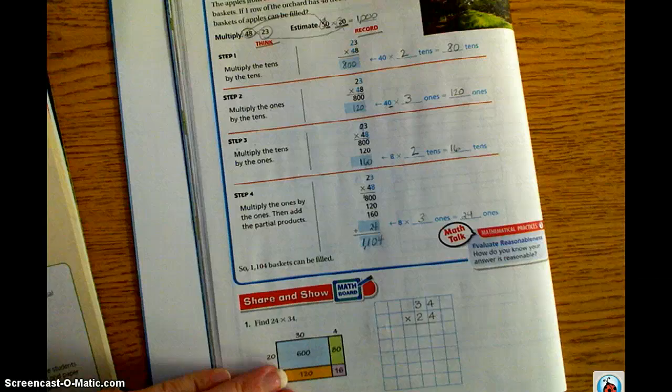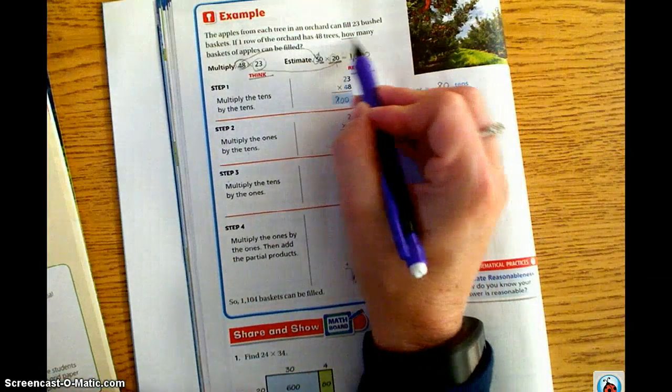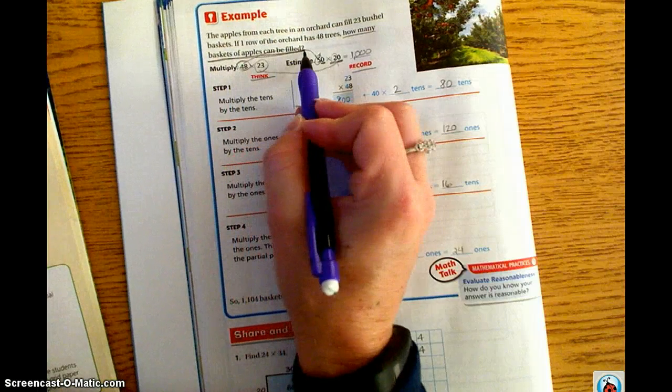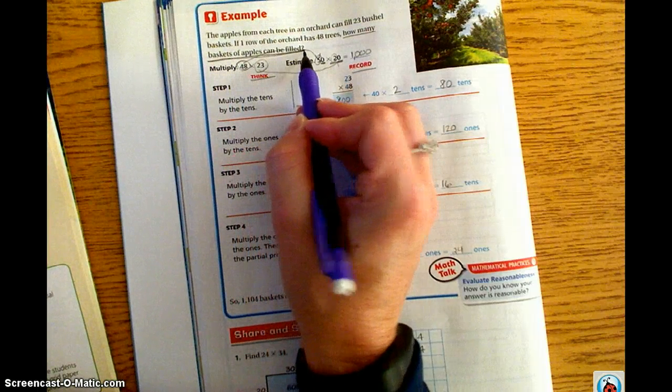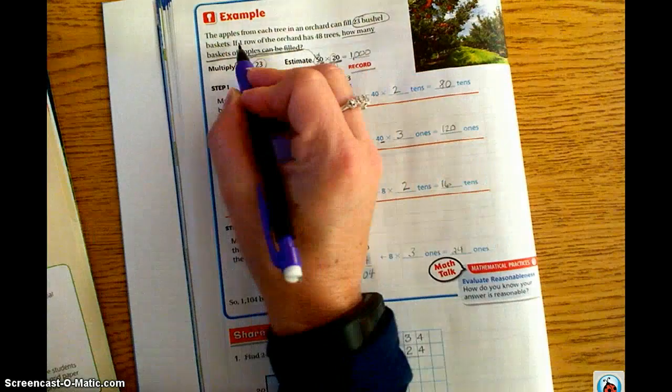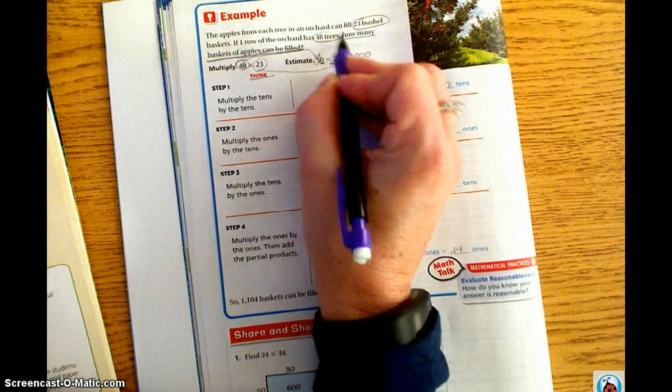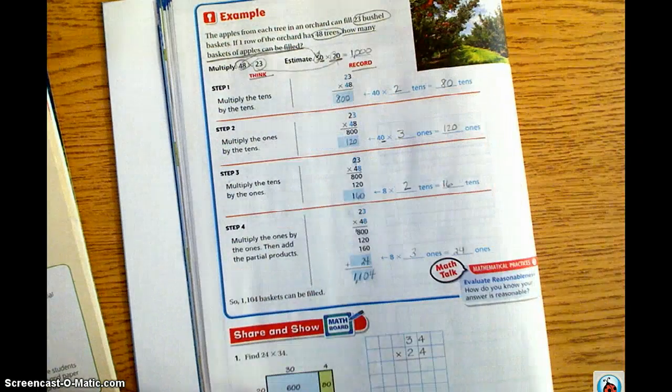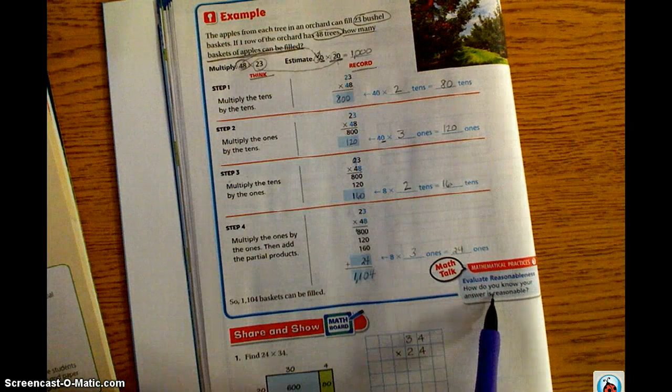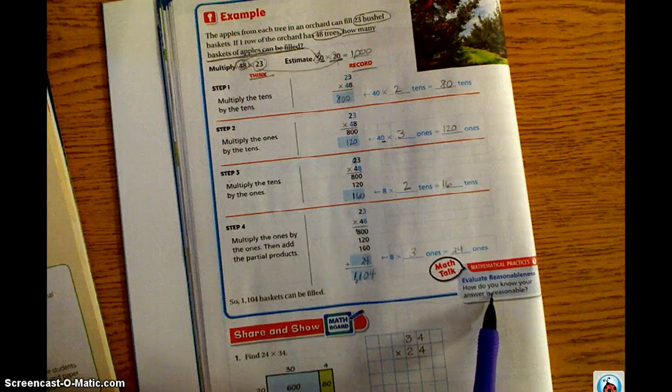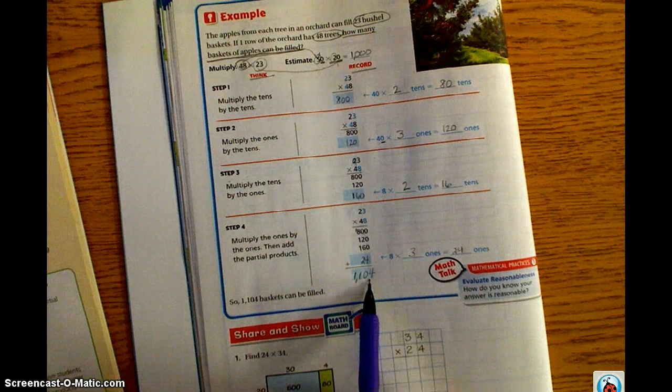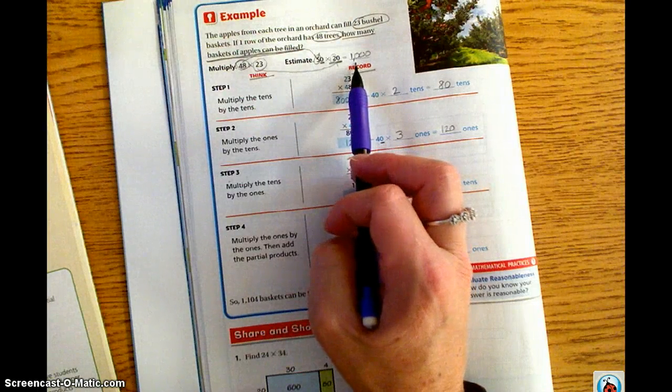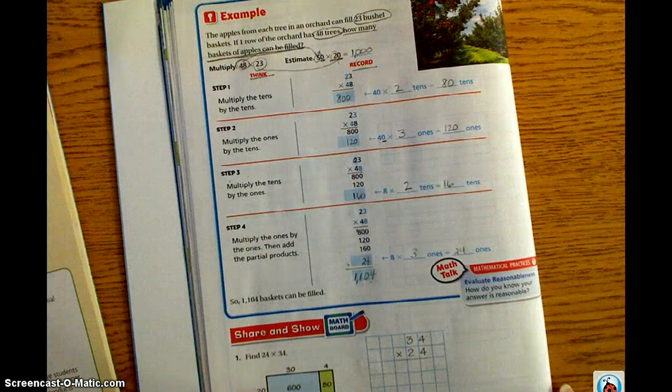So, 1,104 baskets can be filled. If you remember back to the original question, it wanted us to find how many baskets of apples can be filled. And then, our clues that we used were 23 bushels per 48 trees. So, hence the reason we did 23 times 48. Then, if we double check for reasonableness, we look back up and we can see that 1,104 is close to the estimate of 1,000. So that is a reasonable answer.